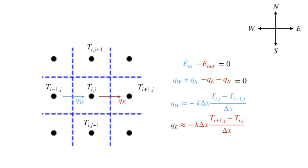Looking now at q east, a very similar expression, the area is the same, and we now have our temperature gradient approximated by Ti plus 1 comma j minus Tij over the distance between them delta x.